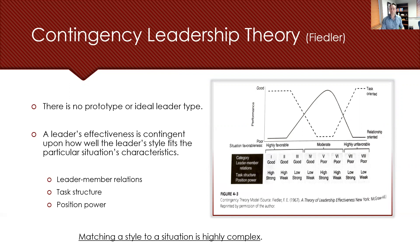Otherwise, they can be classified as poor, as demonstrated in the figure on this slide. The second is task structure, and that refers to the extent to which the task requirements are clear and communicated effectively. When the tasks are clear, a leader's control can increase, and when the tasks are vague, leader control decreases. The task structure in the figure is either low or high.